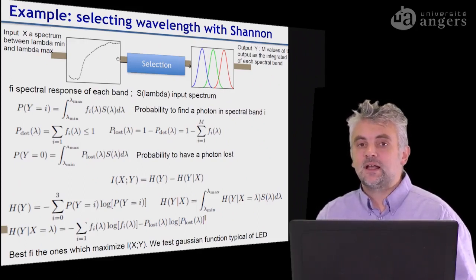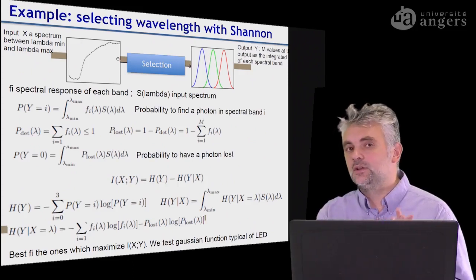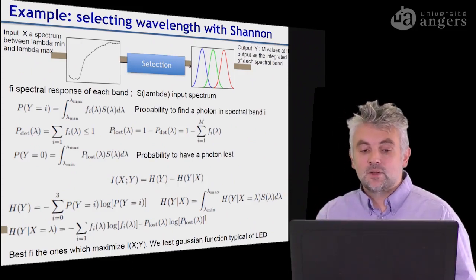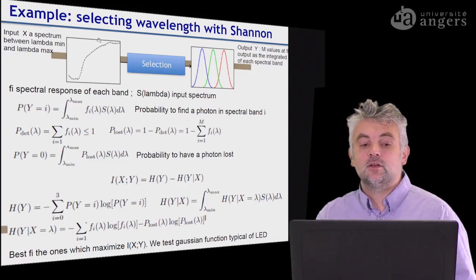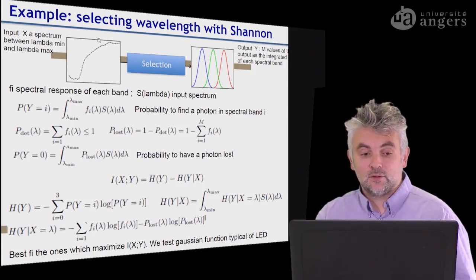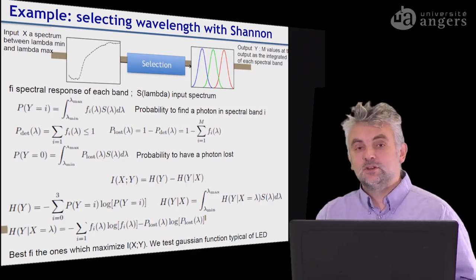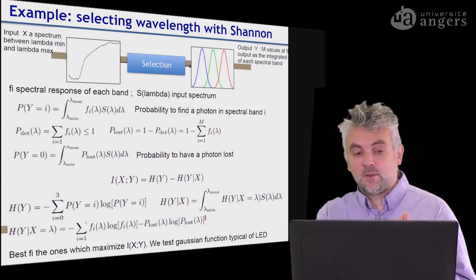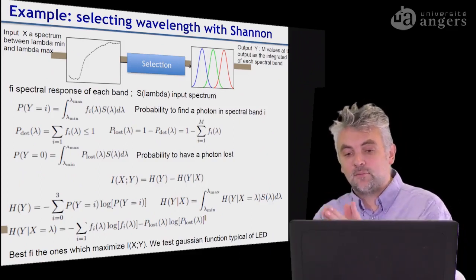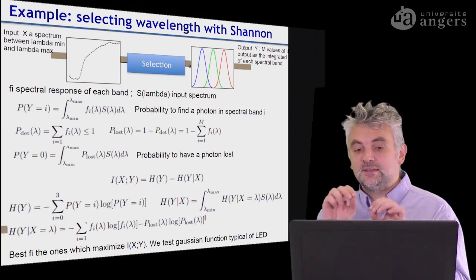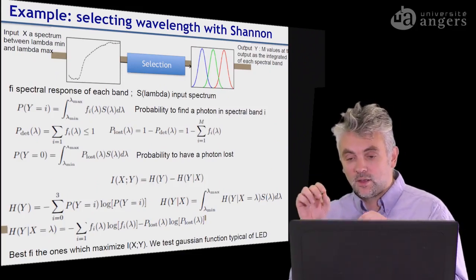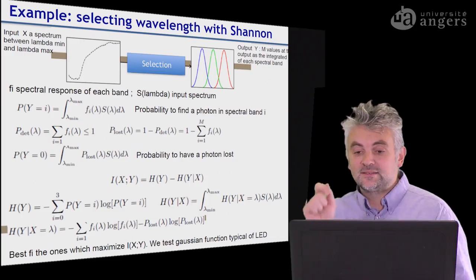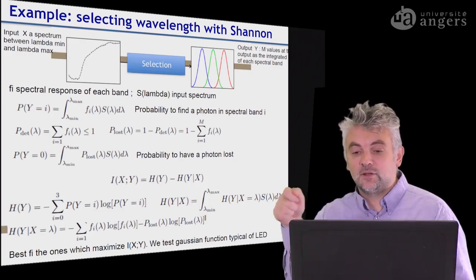We model this as a so-called Shannon information theory channel where we consider that the input of the channel is a spectrum which has wavelength between minimum wavelength and maximum wavelength. And the output is the amplitude of the values as integrative on each spectral band that you will have.